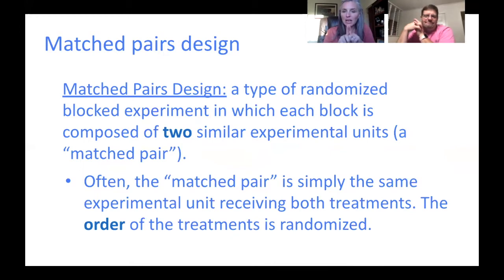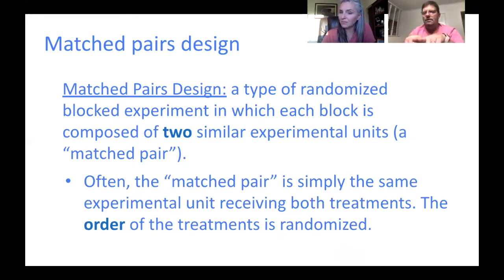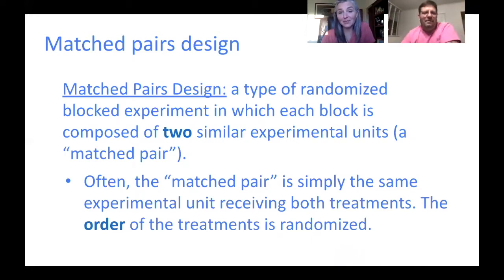You can also match by similarity — if I found another 38-year-old female school teacher with similar characteristics, I could compare us across different aspects. A matched pairs design is a type of randomized block experiment in which each block is composed of two similar experimental units — a matched pair. Often the matched pair is simply the same experimental unit receiving both treatments, though the order of treatments should be randomized.